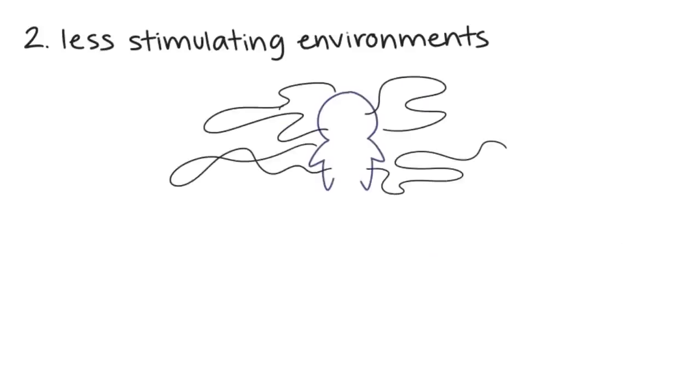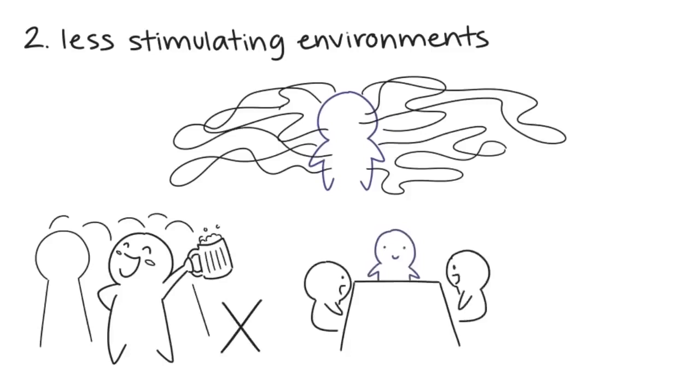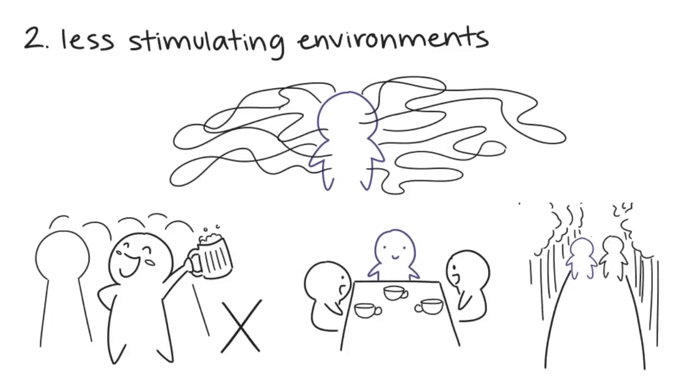Number 2. Spend time in less stimulating environments. Introverts are sensitive to external surroundings. Instead of going to social parties, they prefer hanging out at small gatherings and quiet places. It's not really about the setting, but the company they choose to spend their time with.